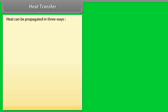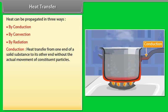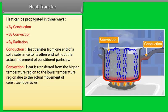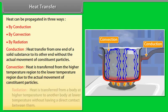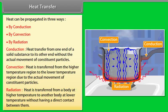Heat transfer: Heat can be propagated in three ways. Number 1: By conduction — heat transfer from one end of a solid to its other end without actual movement of particles. Number 2: By convection — heat transferred from higher to lower temperature region due to actual movement of constituent particles. Number 3: By radiation — heat transferred from a body at high temperature to another at lower temperature without direct contact between them.